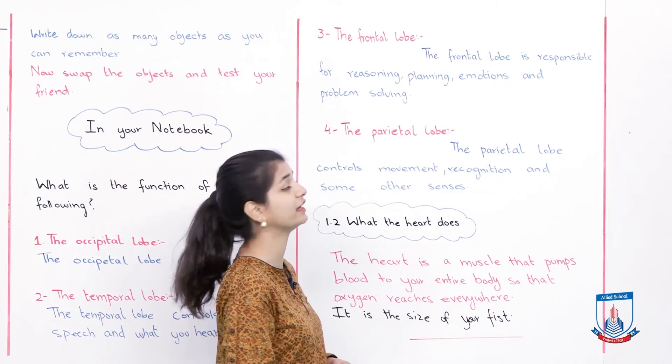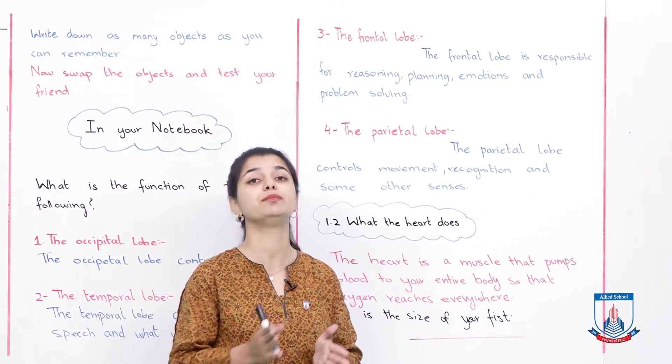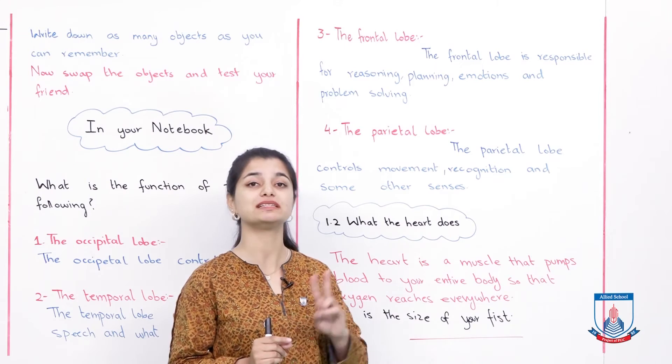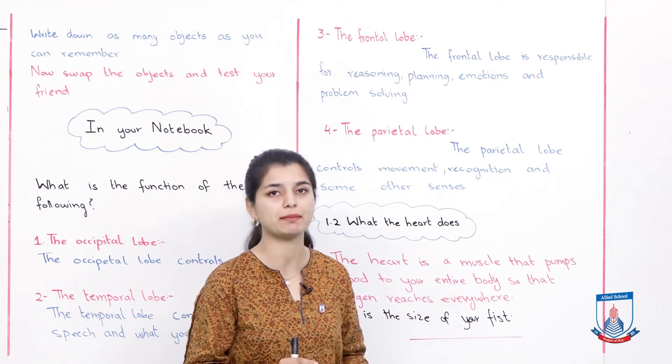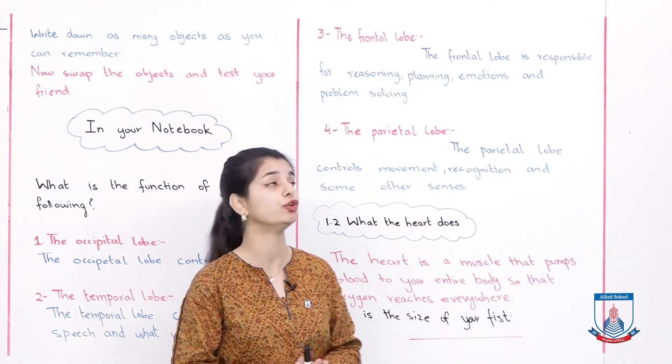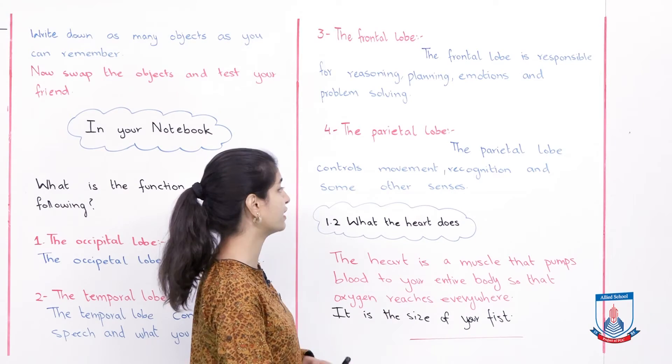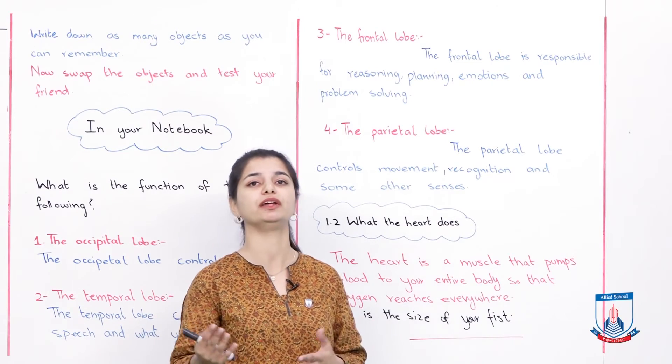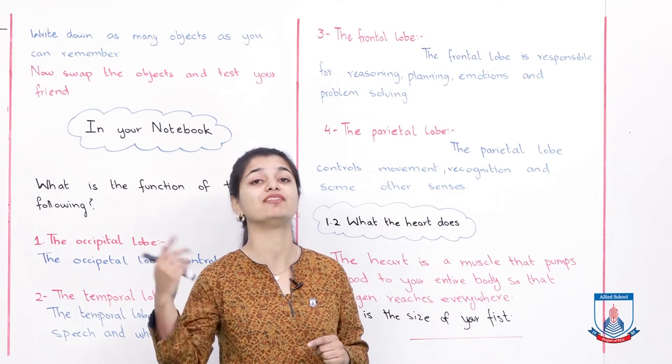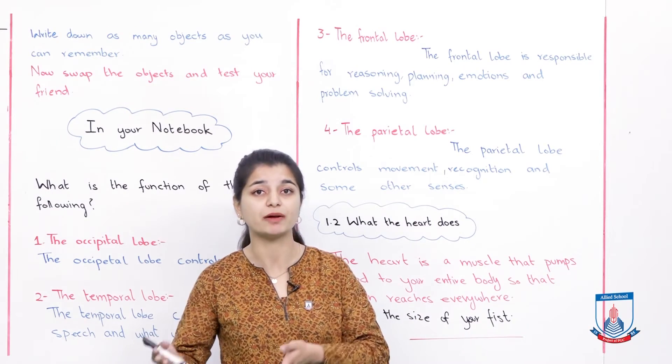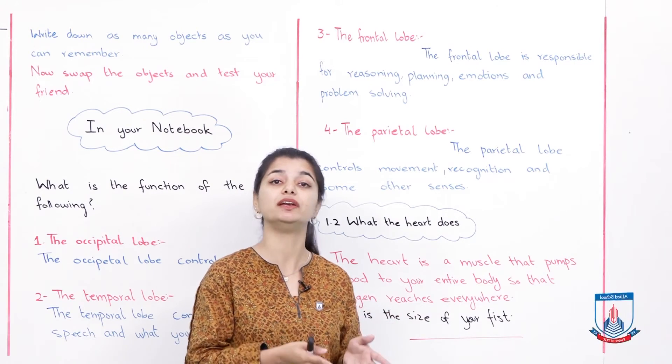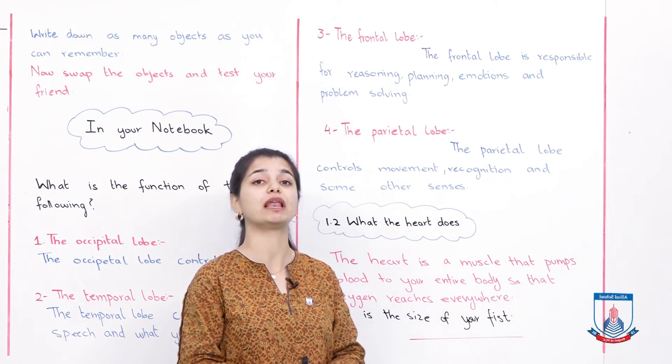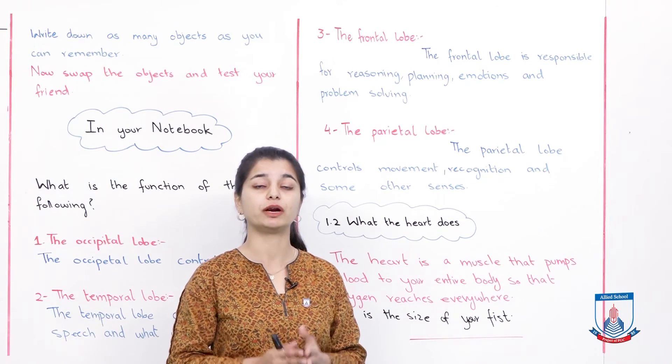That leaves us with the last part, the fourth part: the parietal lobe. These are the parts of the cerebrum, not the brain. The two parts of the brain are cerebrum and cerebellum, and these are the four parts of the cerebrum. The parietal lobe controls movement, recognition and some other senses. The recognition ability - like recognizing a shirt you've seen, a movie you've seen, or a person you've seen - the parietal lobe controls all of that.